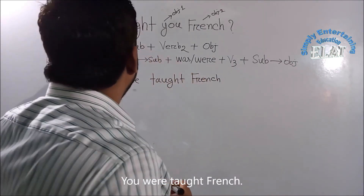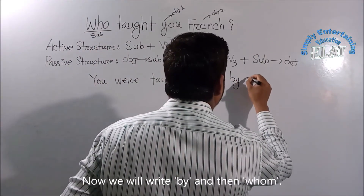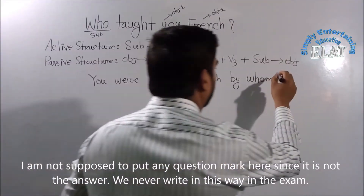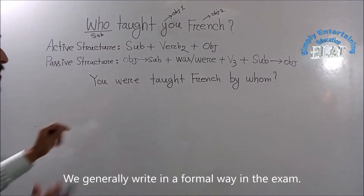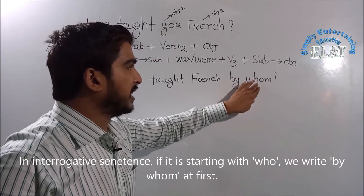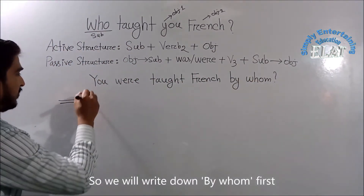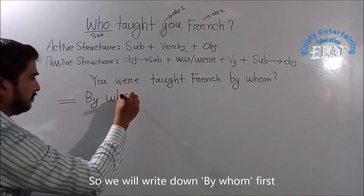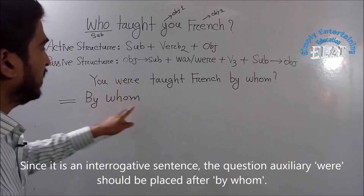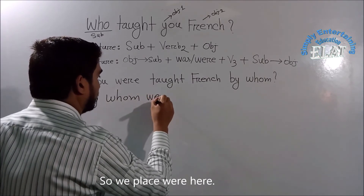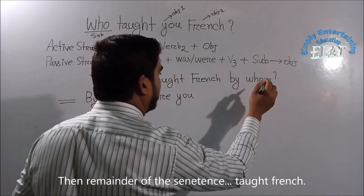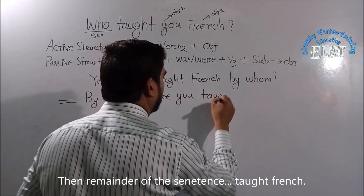You are taught French. We have given the same name by 'whom'. If we have the same name, we can use the same name by 'whom'. This sentence is a very interesting interrogative sentence. This sentence has a question auxiliary — by whom were you taught French?